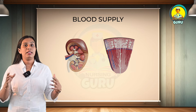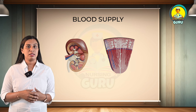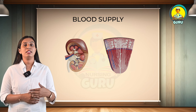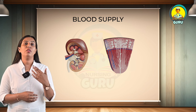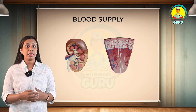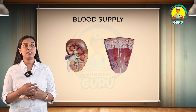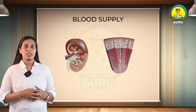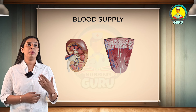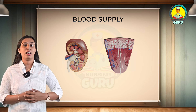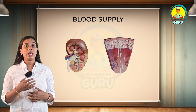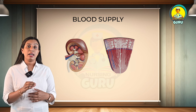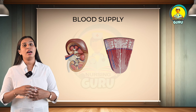Regarding the blood supply of the ureter: in the upper part, the renal artery; in the middle part, the testicular or ovarian artery; and in the pelvic part, it is supplied by the superior vesicle artery, uterine, and middle rectal arteries. Venous blood drains into the veins corresponding to the arteries.